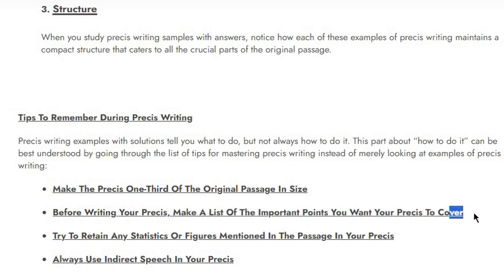Before writing your précis, make a list of important points. Rough work is very, very important, so make sure you're noting the points on the side — underline, highlight, circle, star — that's totally up to you. Try to retain any statistics or figures mentioned: for example, dates like 1980, 1960, 1991, or percentages like '50% of the population.' Facts, statistics, figures, and numerics should remain the same — you cannot change them. Also, use indirect speech in your précis; don't go for direct speech.